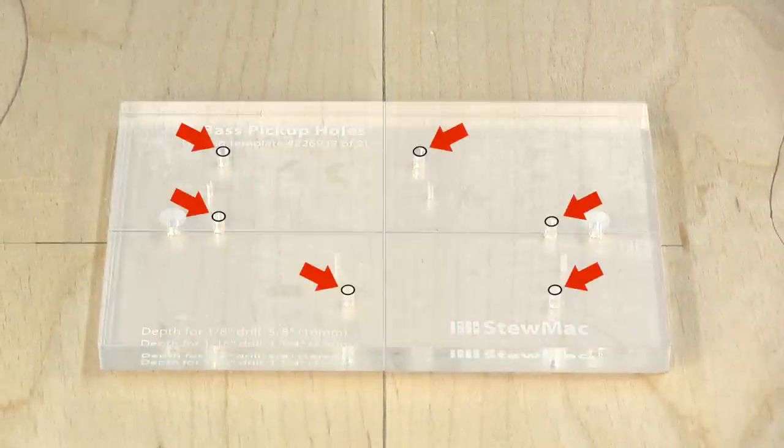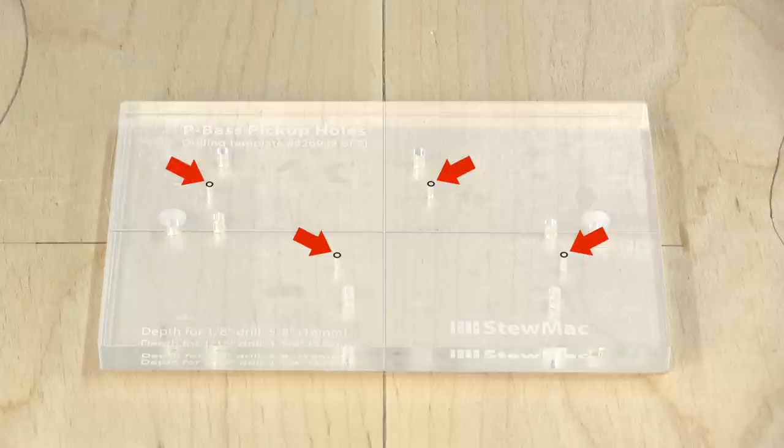The larger holes are for the tight corners of the pickup cover. The smaller holes are for your pickup mounting screws.